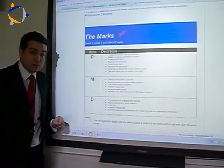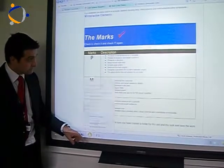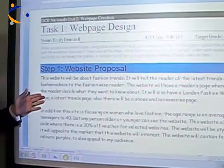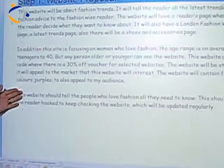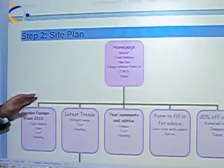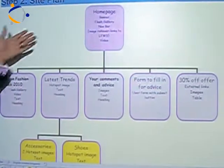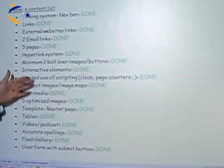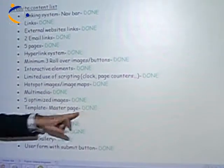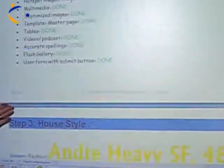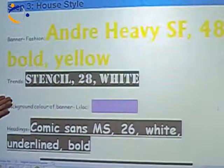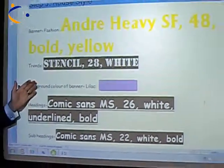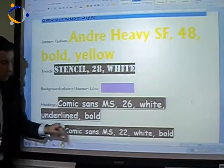Let's have a look at an example of this. Here's the proposal. And here's the top-down diagram showing the structure — notice it's all done very professionally. Here's a list of everything that needs to be on the website; notice the author noted when they've done them. And here's the detail on the house style — notice the colours are very clear, and they've described the fonts and the size of them.